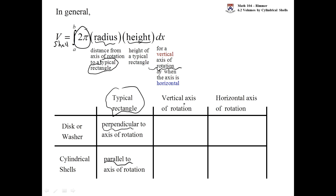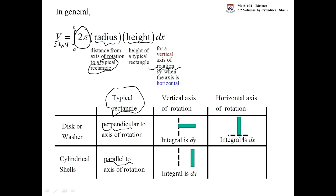To tie it all together with disk and washer: for disk and washer the typical rectangle is perpendicular to the axis of rotation, but for shell it's parallel to the axis of rotation. If you have a vertical axis like the y-axis, disk and washer is in y, but shell draws a parallel rectangle that moves left to right — so that's in terms of x. If you have a horizontal axis like the x-axis, disk and washer is in x, but shell draws a parallel rectangle that moves upward — so that's in terms of y. From here on we'll try to set up both methods and figure out which is best.